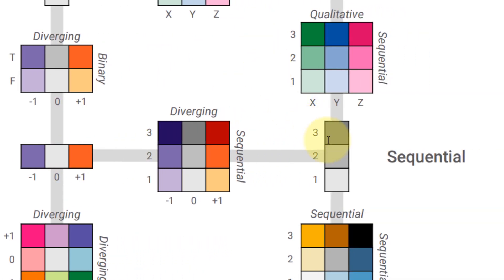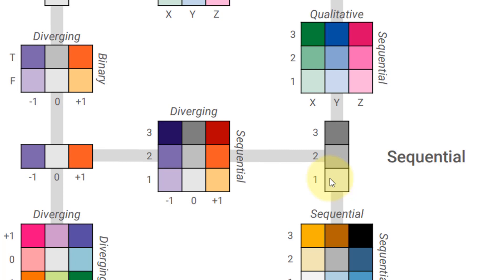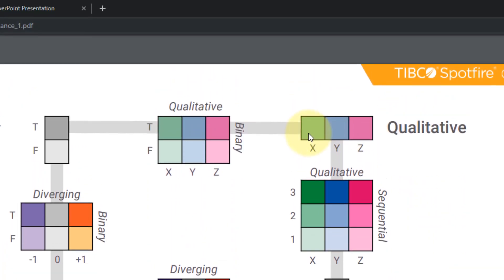Sequential is similar to diverging in that it'll show numerical values, but it's showing a sequence, and the order will matter. It might be from low to high, or it might be ratings from bad to good. Now, qualitative is categorical in nature, but there's no order that matters. This could be like different states in the U.S. — there's no order between Texas and Alabama; they're just different qualitative values in your data.